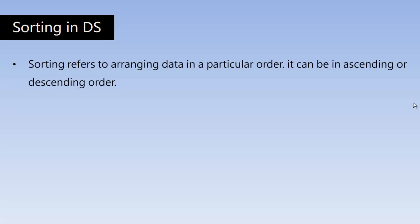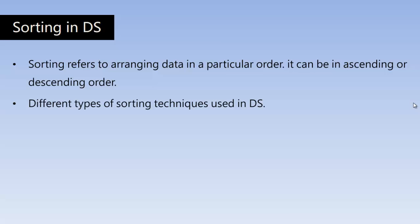First we will understand the basic idea of sorting and then we will go and implement the different types of sorting techniques. Sorting refers to the arrangement of data in a particular order — it can be ascending or descending order. By default if I say sorting, it is obviously ascending order. If I want to refer to descending, I should explicitly tell the descending order. Sorting by default refers to the ascending order.